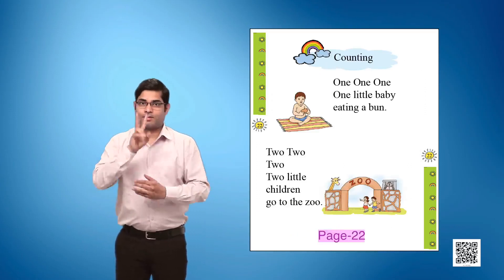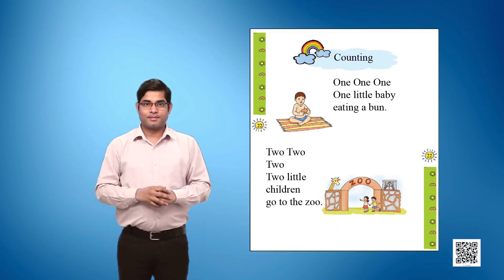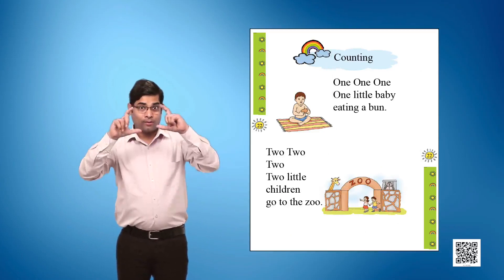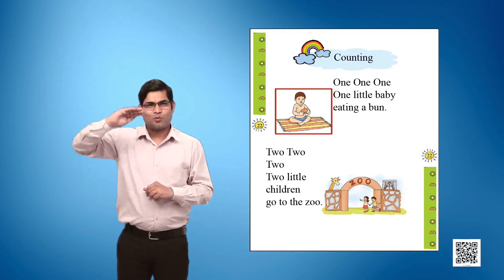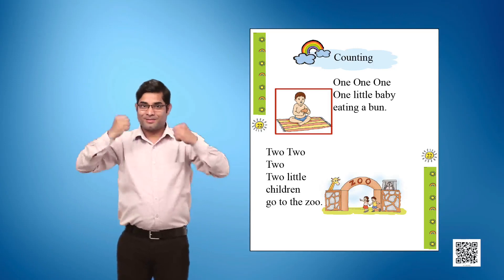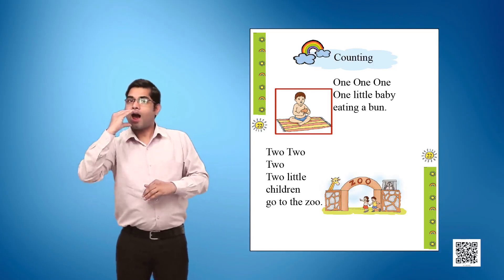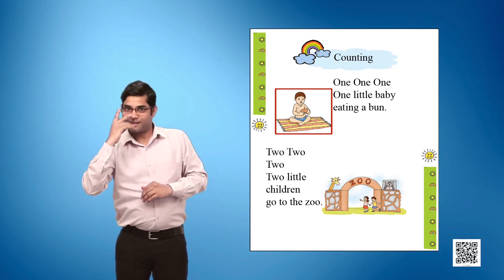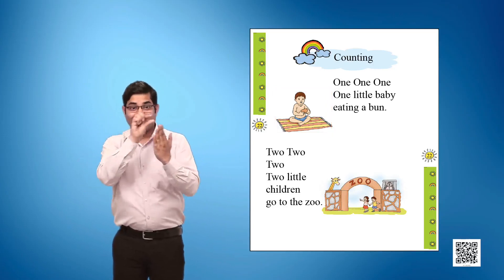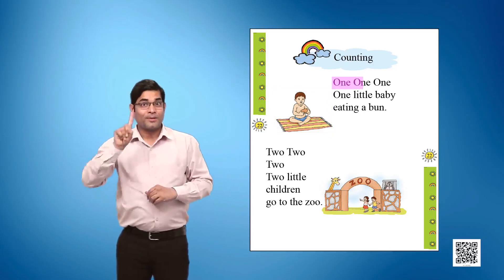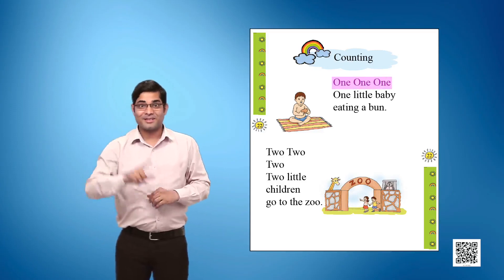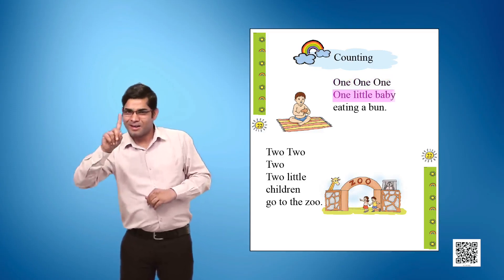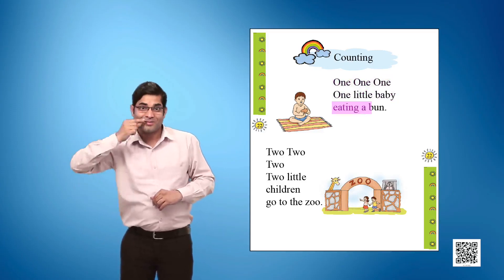Page 22, Picture 1 shows a boy sitting on a mat with a bun in his hand. Text given: One One One, One little baby eating a bun.